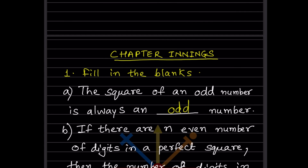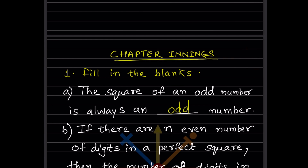The first question: the square of an odd number is always an odd number. For example, 3 squared is 9, which is an odd number. If we take 5 squared, that is 25, which is also an odd number.